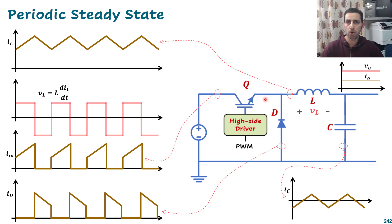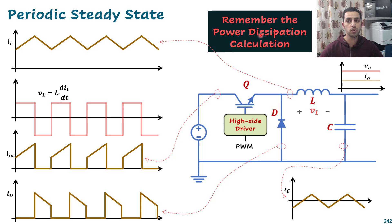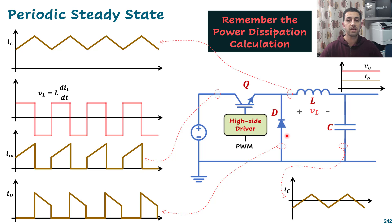What is the benefit of knowing the average current values? We use them to calculate power dissipation. The switch loss is calculated by multiplying the average current by VCE-sat or RDS-on, and similarly we multiply the average current by the voltage drop across the diode to calculate diode power dissipation.